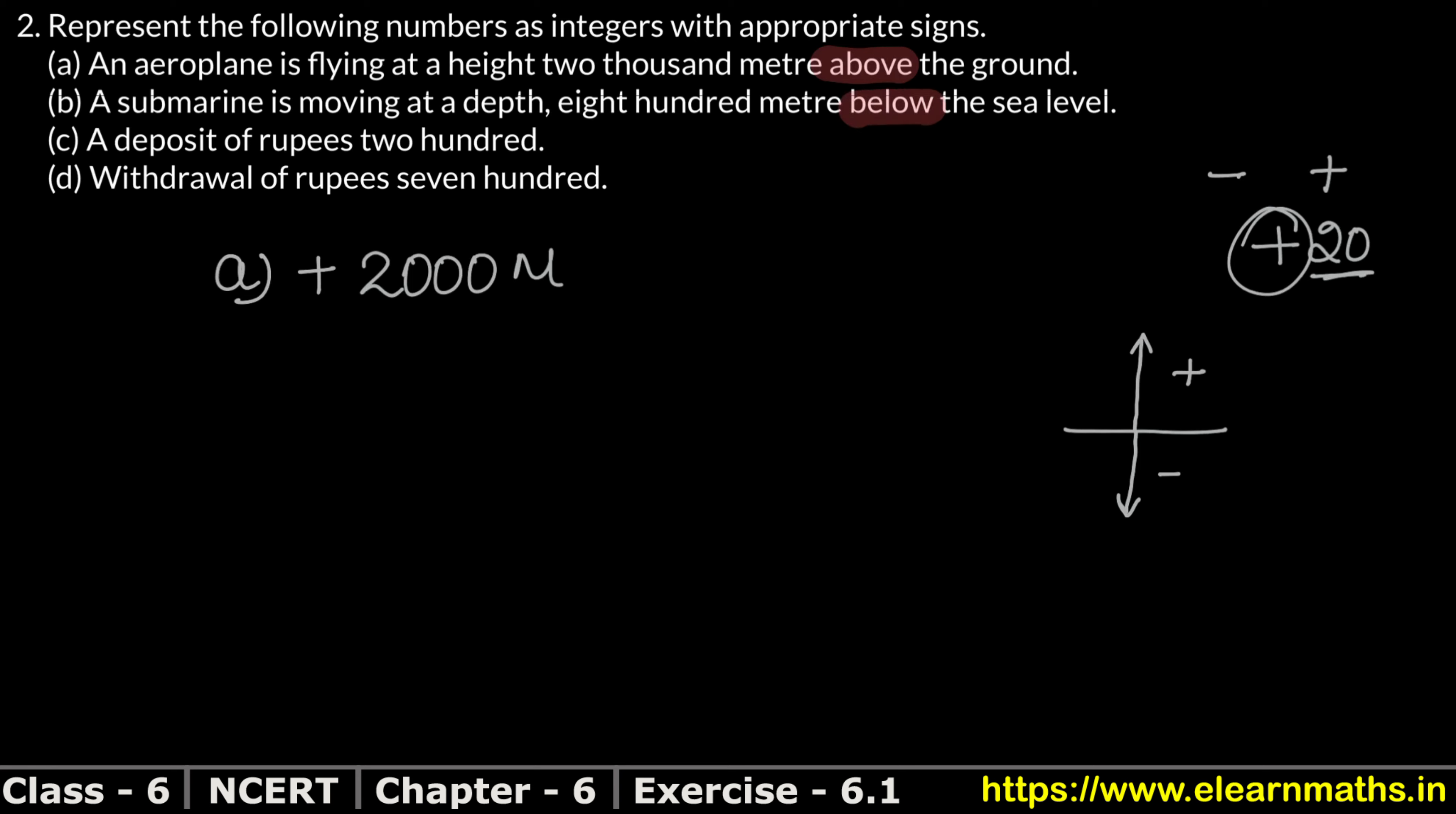Look, what is it saying here? Below the sea level. Below, we just saw, below means minus. So what will come here in part B? Minus. But how much? Look at the figure: 800 meters. So minus 800 meters.